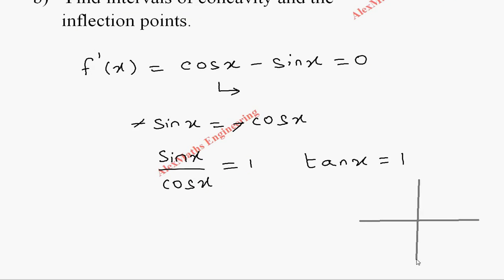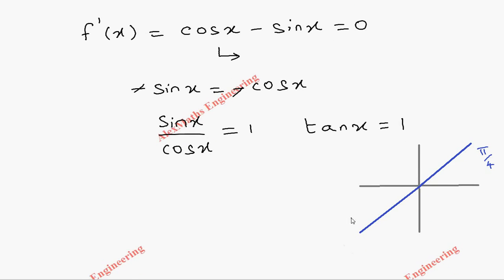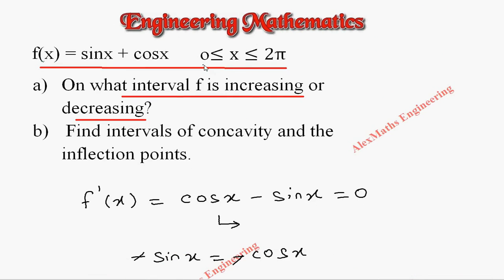When tan x = 1, looking at the coordinate axis, x = π/4. Tan is positive again in the third quadrant, so the other value is π + π/4, which is 5π/4. So x₁ = π/4 and x₂ = 5π/4.